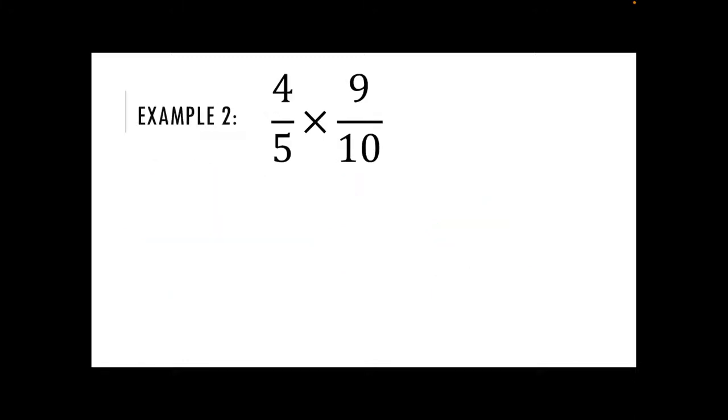Our second example then, do exactly the same thing. Four times by nine is thirty-six. Five times by ten is fifty. So I have thirty-six out of fifty. They are both in my two times table. So I'm going to get down to eighteen over twenty-five for my final answer.